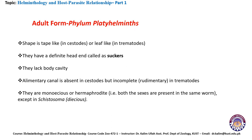The adult form of Phylum Platyhelminthes — their general characteristics: their shape is tape-like in cestodes or leaf-like in trematodes. They have a definitive head, also called the scolex. They lack a proper body cavity. The alimentary canal is absent in cestodes but incomplete in trematodes. They are monoecious or hermaphrodite, meaning both sexes are present in the same worm, except in Schistosoma, which are not hermaphrodite.